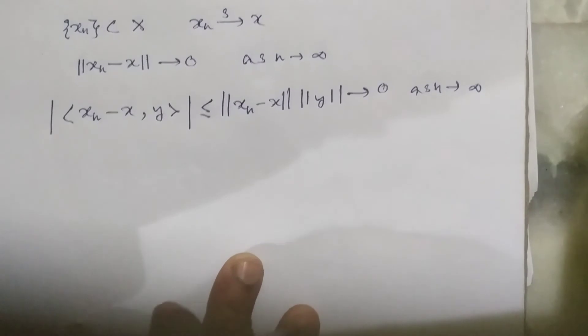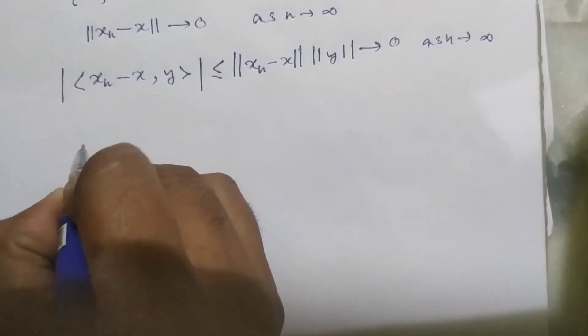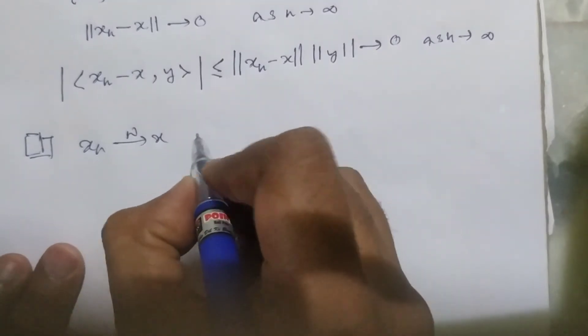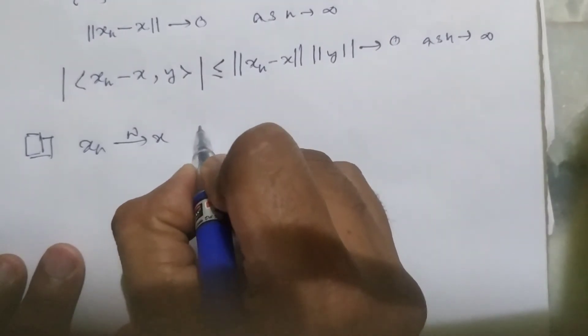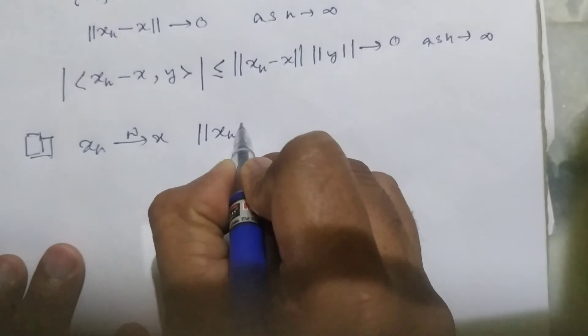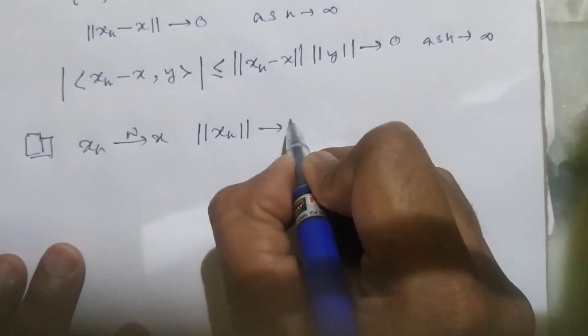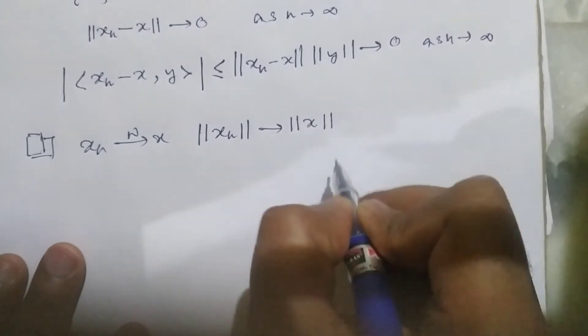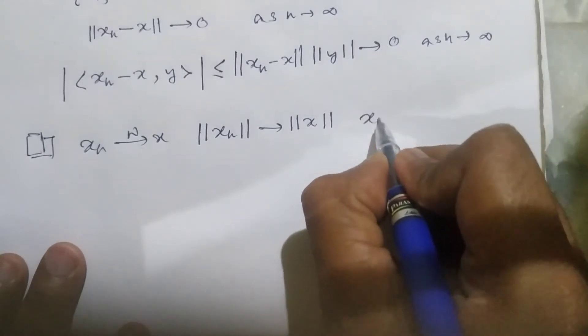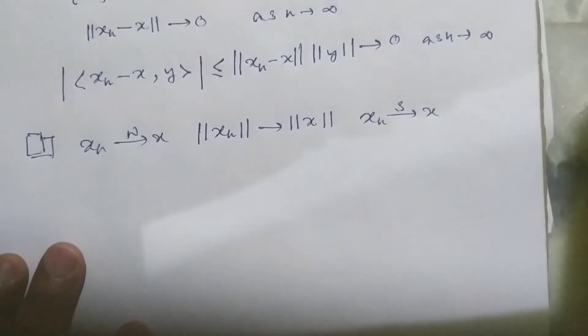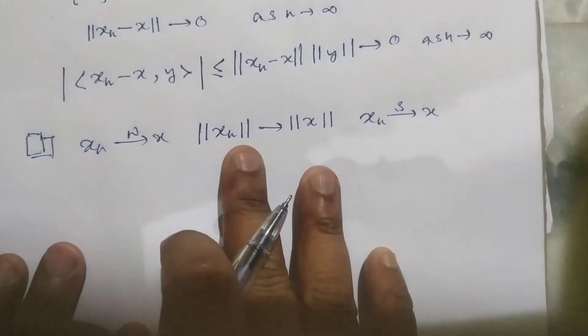This is the theorem relating strong and weak convergence. We have shown that xn weakly converging to x and xn strongly converging to x are connected.